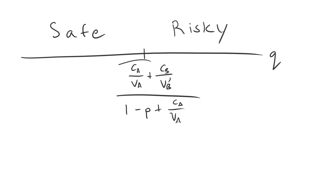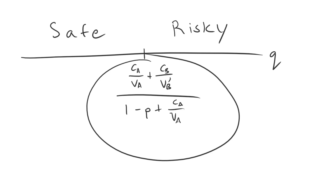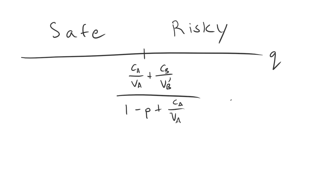Specifically, there exists a critical cut point such that if A's prior belief Q — that B has a low valuation, and therefore is willing to give in to any demand A makes — is sufficiently high, then A demands the entire prize and risks war against the high valuation type, which will reject and fight. In contrast, if that prior belief Q is relatively low, A thinks it's relatively likely to be facing a high valuation type, so it makes some concession to convince the high valuation type to accept, which also induces compliance from the low valuation type. That's a safe demand that both types accept, and we don't see war.